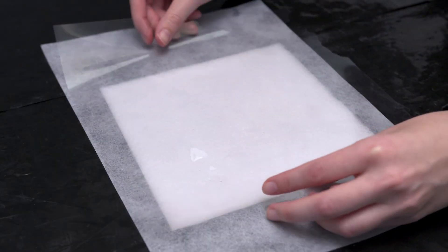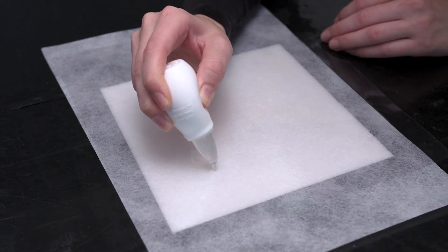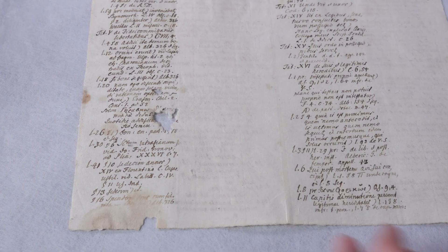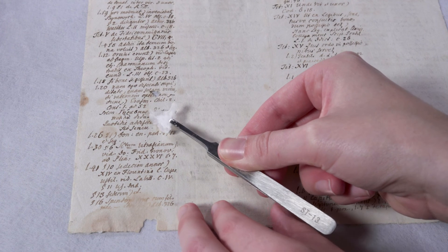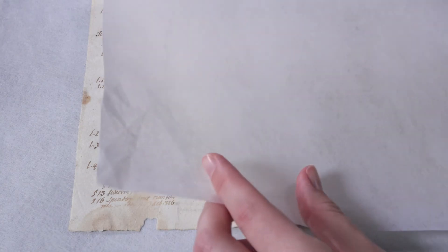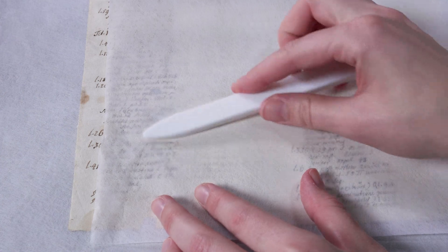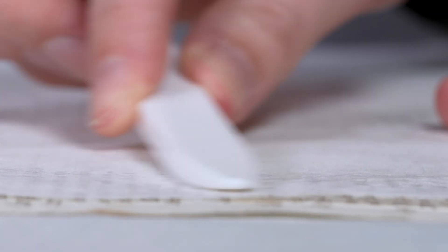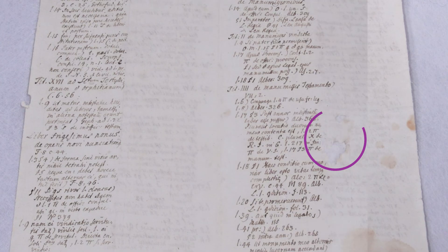The template is placed on the vacuum table and filled with infilling material. The finished dry supplement is then glued into the loss. The loss has now been closed again.